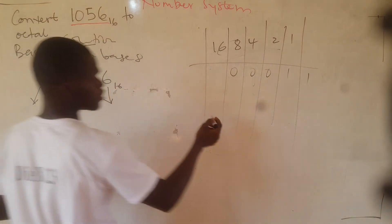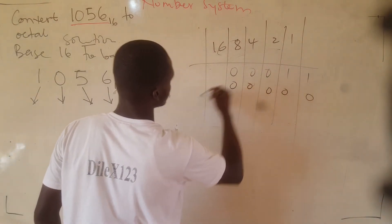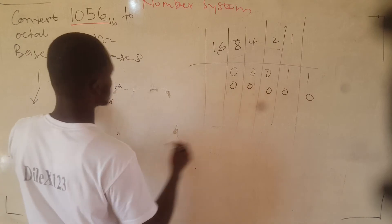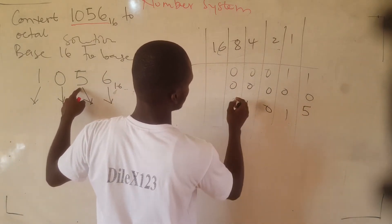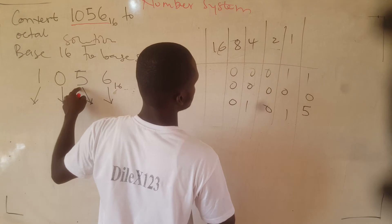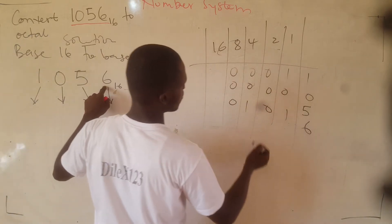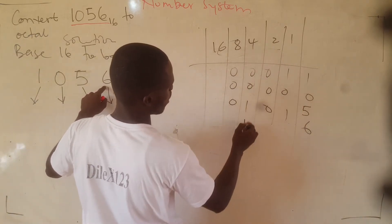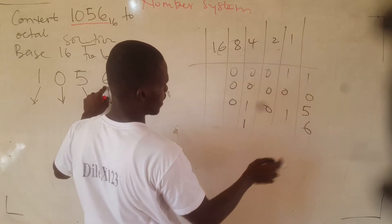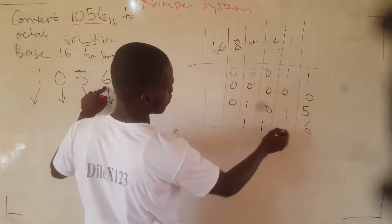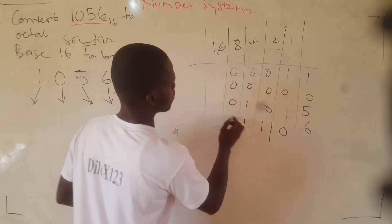We want to represent 0 using 4 bits — we just write 0, 0, 0, 0. We want to represent 5 using 4 bits — we have 0, 1, 0, 1. We want to represent 6 using 4 bits. 4 divides 6 once with a remainder of 2. 2 divides that 2 once without a remainder. So this gives 0, 1, 1, 0.